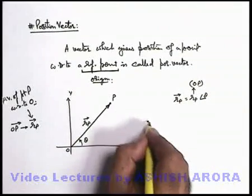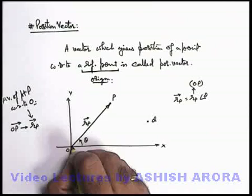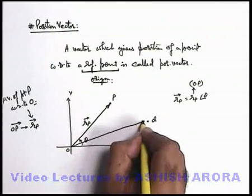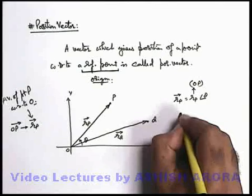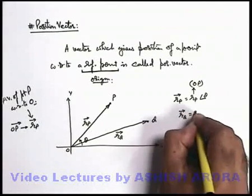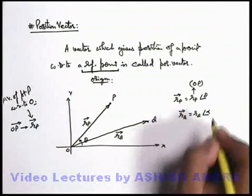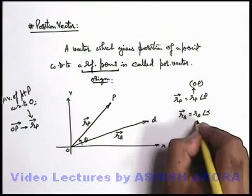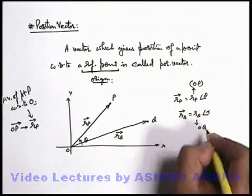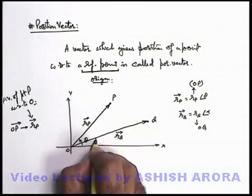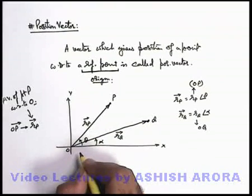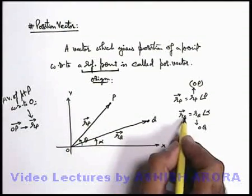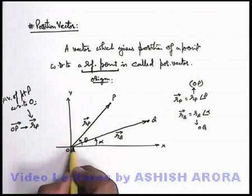Similarly, say we're having another point Q. This will also have a position vector which is given like this, say this r_Q vector. So we can write r_Q vector is equal to r_Q angle alpha. Here r_Q is the distance OQ, and alpha is the angle measured of this line OQ from the positive direction of x axis. This is the position vector of point Q with respect to origin.